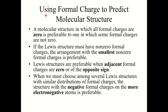So why do we care about formal charge? Formal charge is useful for predicting molecular structure when you have multiple Lewis structure options. A structure where all formal charges are zero is preferable to one where some are not zero. If non-zero formal charges are unavoidable, the arrangement with the smallest non-zero charges is preferable. It's also preferable to have adjacent formal charges be zero or of opposite sign — having two adjacent atoms with the same sign charge is unfavorable.